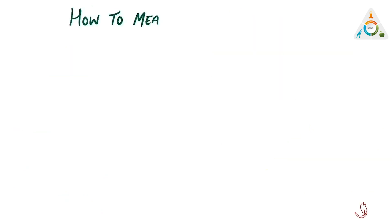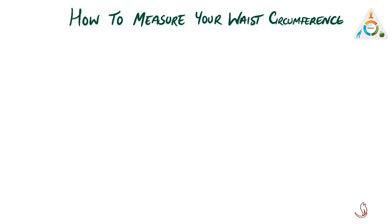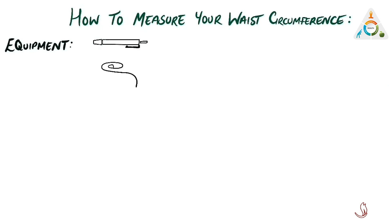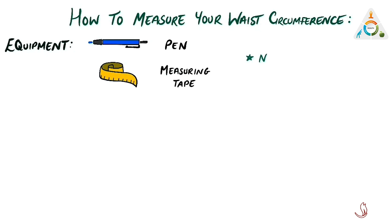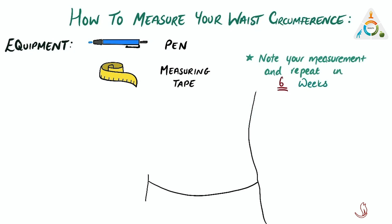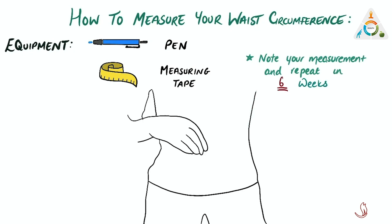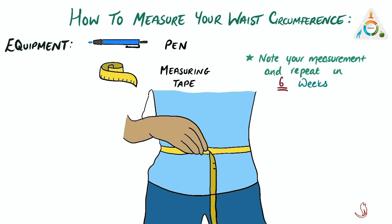In a moment we will demonstrate how you can measure your own waist circumference. All you need is a measuring tape and a pen to mark. You can ask someone to help you if you need. Mark your waist measurement today and make a note of it. You should aim to repeat this every six weeks and monitor your progress.